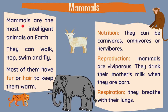Mammals are the most intelligent animals on earth. They can walk, hop, swim and fly. And most of them have fur or hair to keep them warm.